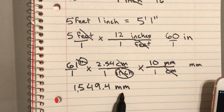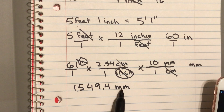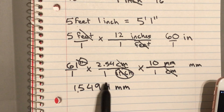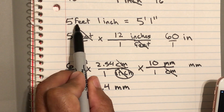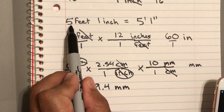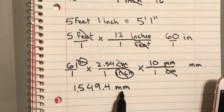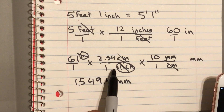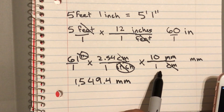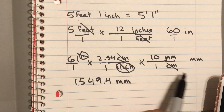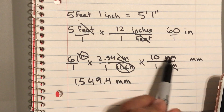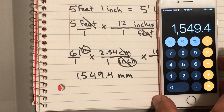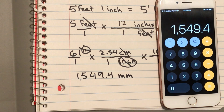You can ask yourself: is this unit small compared to the starting unit? If it's a small unit, you should have a very large number relative to your starting number. A large unit goes with a small number; a small unit goes with a very large number. We're multiplying by one each time — just converting units. Thank you very much for watching, and enjoy!